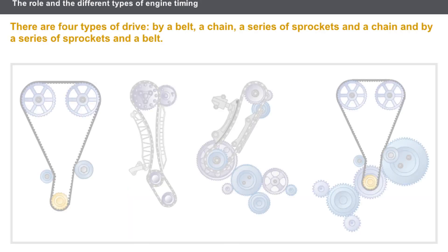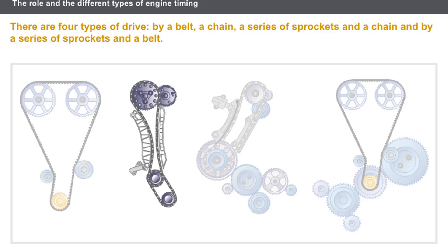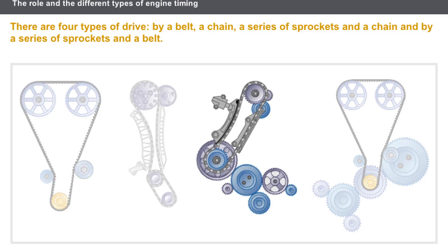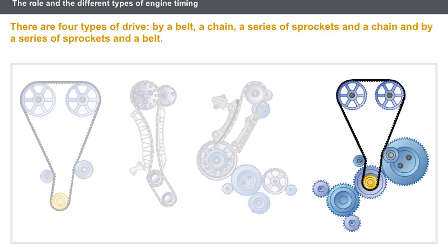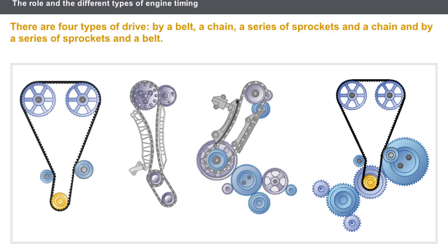The connection between the camshaft and the crankshaft can be made via the following components: sprockets and a belt, a chain, a series of sprockets and a chain, or a series of sprockets and a belt. These are the four types of drive that currently exist.